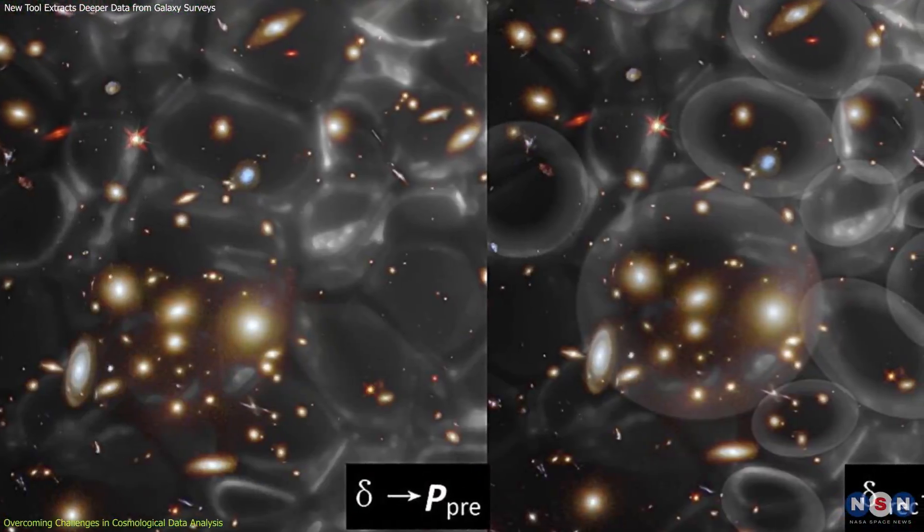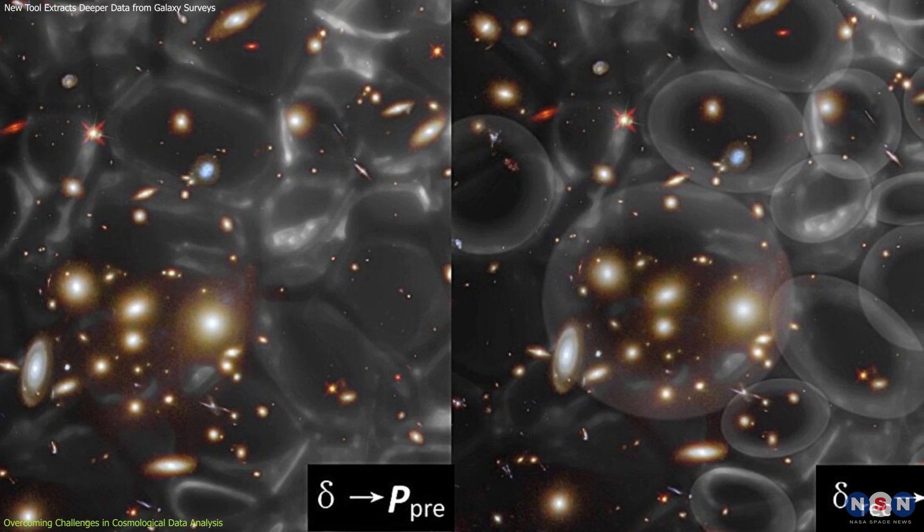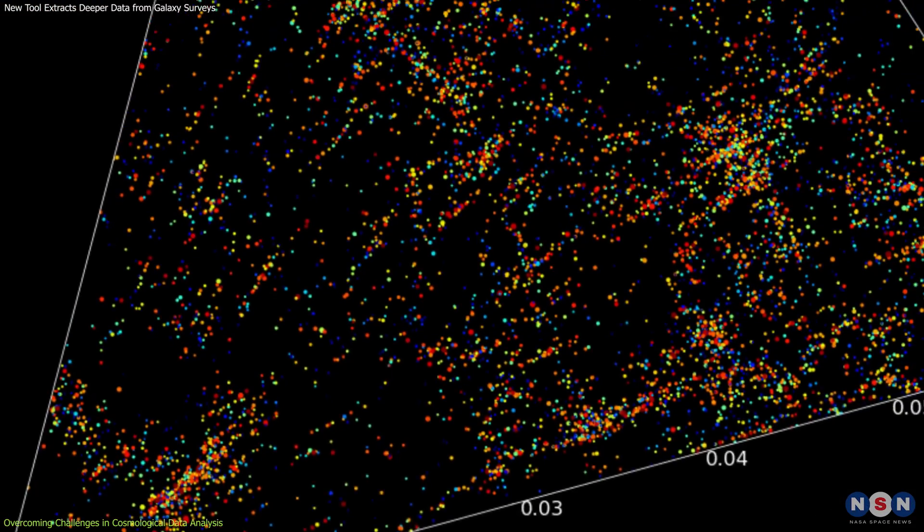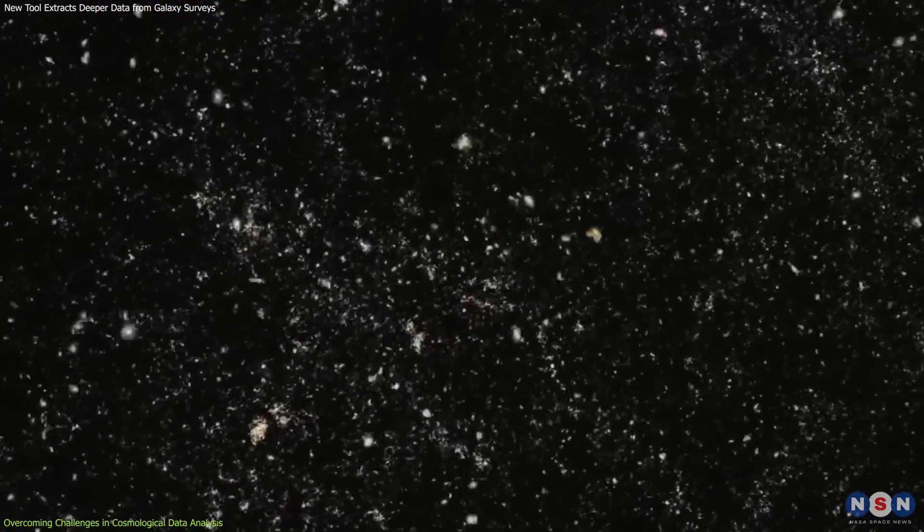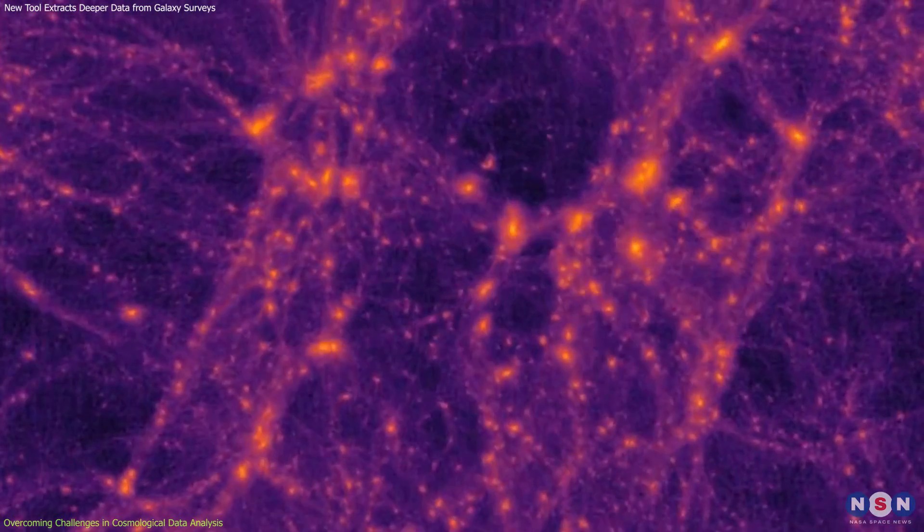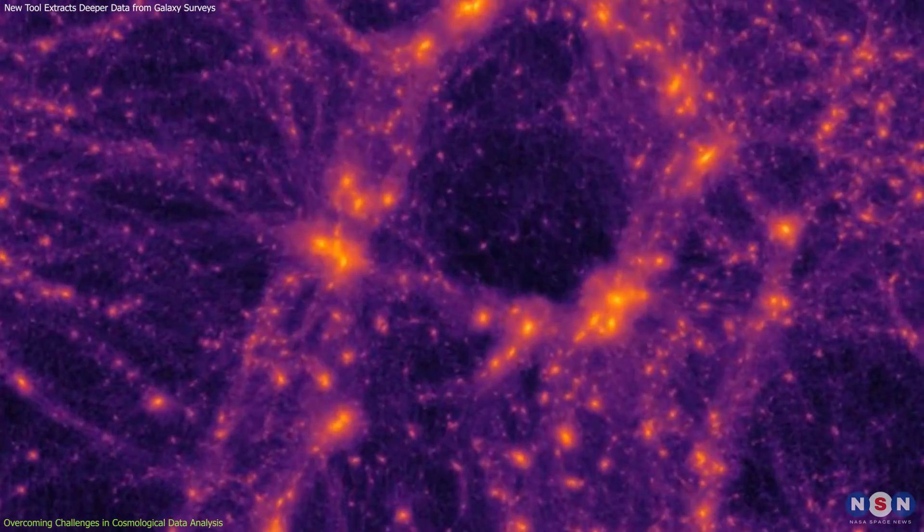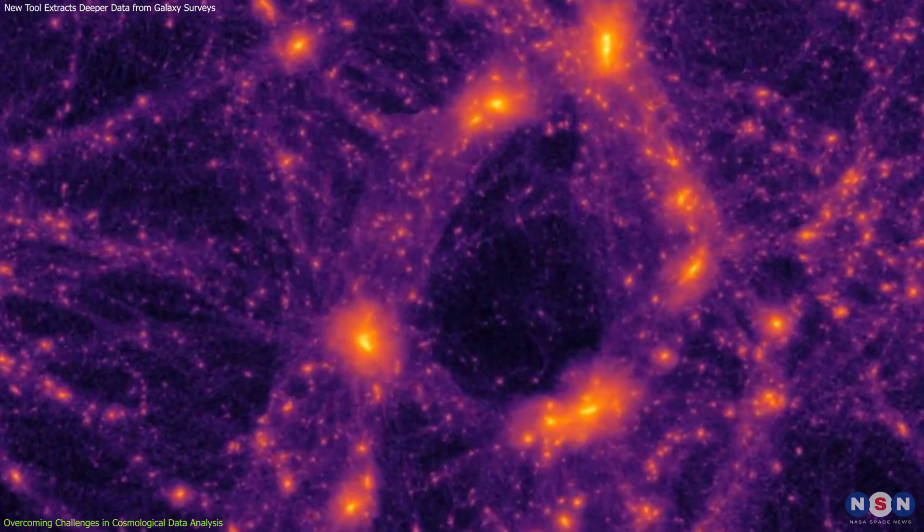Additionally, this technique enhances the accuracy of cosmological inferences that can be drawn from galaxy surveys. By providing a clearer view of the underlying density fields, astronomers can more precisely measure the parameters that define our universe's overall structure and composition.